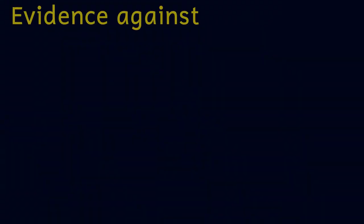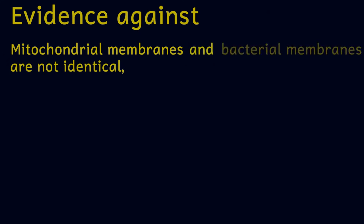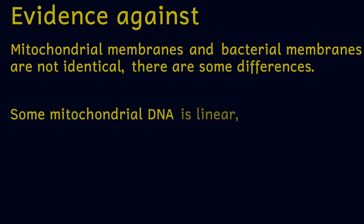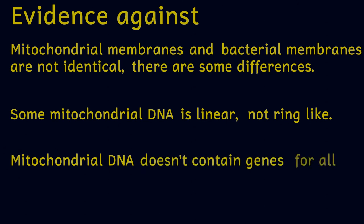So is there any evidence against this hypothesis? Well, yes there is some. Firstly, the membranes surrounding the mitochondria aren't exactly like the membranes that surround bacterial cells — they have a slightly different composition. Also, some mitochondria have linear DNA, not ring-like. This linear mitochondrial DNA is found in some plants, fungi and protists, though the mitochondrial DNA in animal cells is all circular. Also, mitochondrial DNA doesn't contain genes coding for all of the proteins that a mitochondria needs. These questions can mainly be answered by pointing to the fact that this relationship has been happening for a couple of billion years, which is plenty of time for them to lose their independence and to change slightly in other ways.